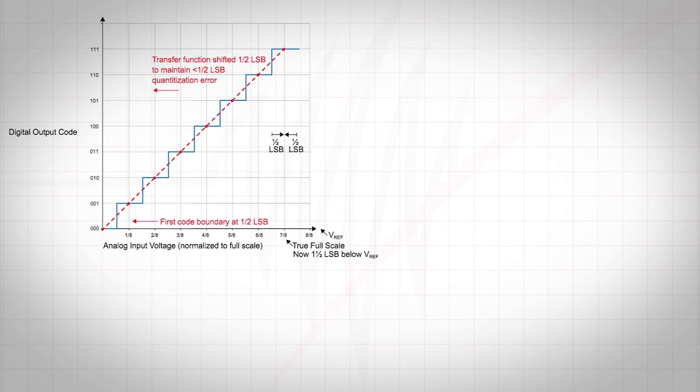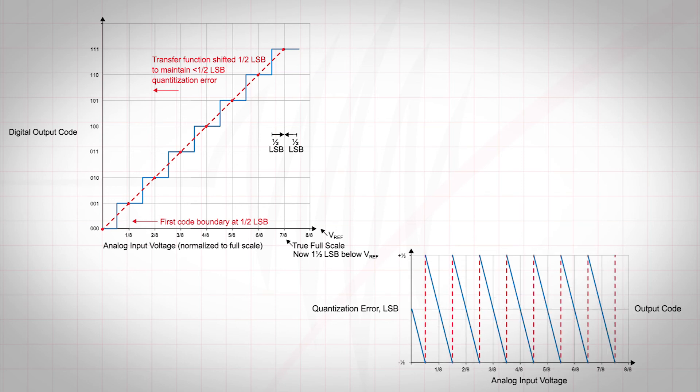Additionally, ADC manufacturers will also introduce a negative half LSB offset to shift the transfer function to the left and shift the quantization error from range of negative 1 to 0 LSB to negative 1 half to positive 1 half an LSB, thus minimizing the maximum absolute quantization error to half an LSB.